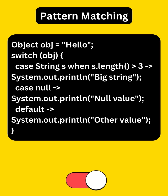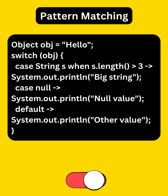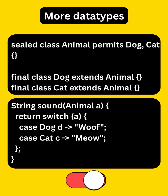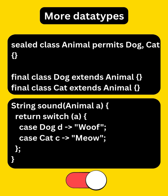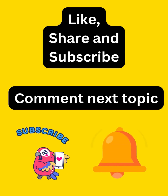We can now use pattern matching with instanceof-like checks, guard conditions like when, and even handle null safely. In Java 21, switch works with records, sealed classes, and sealed interfaces using pattern matching.